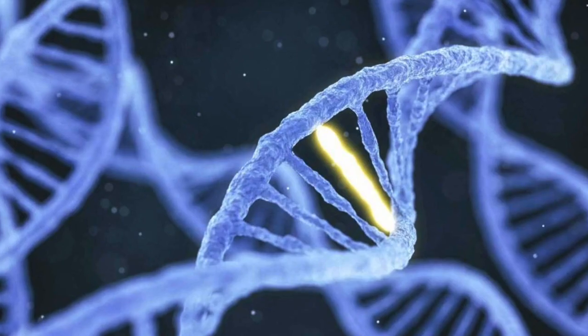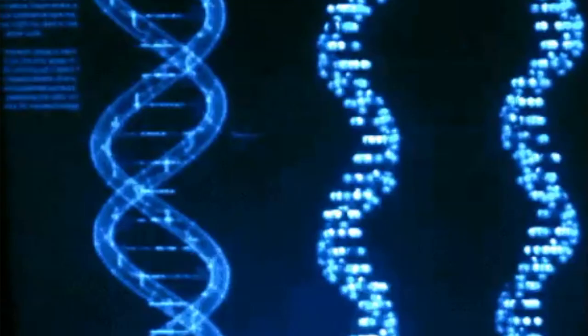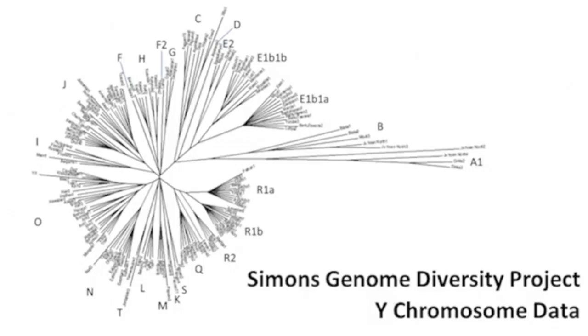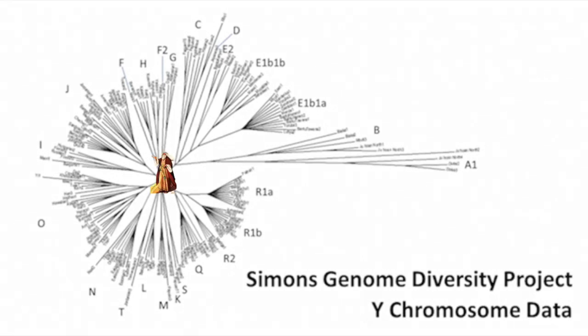From time to time, a mistake occurs, and every time this transpires, a new branch in the family tree is generated. This is where we can examine all the branches in the world and determine that they go back to a single person.